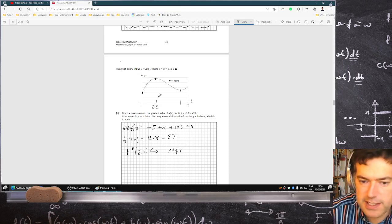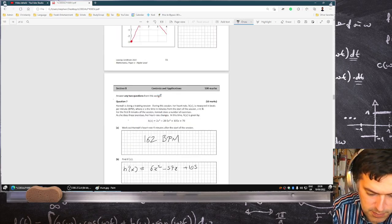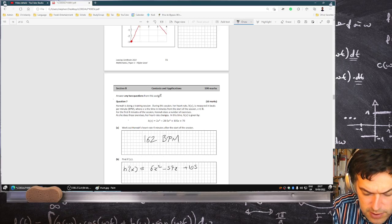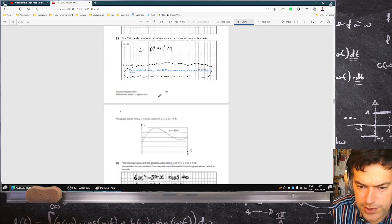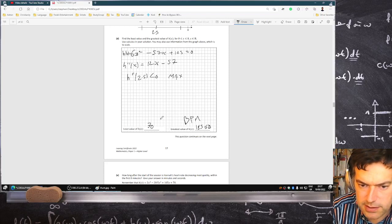So 2.5 is definitely the maximum. So we sub 2.5 back into the original. 2 times 2.5 cubed minus 28.5 times 2.5 squared plus 105 times 2.5 plus 70. 2 times 2.5 cubed minus 28.5 times 2.5 squared plus 105 times 2.5 plus 70. That is 185.625. And these are beats per minute, of course.